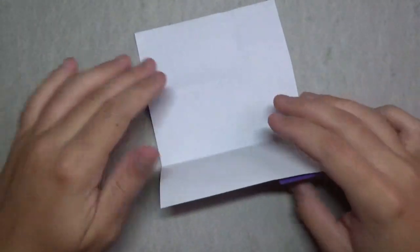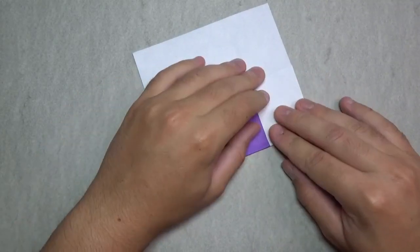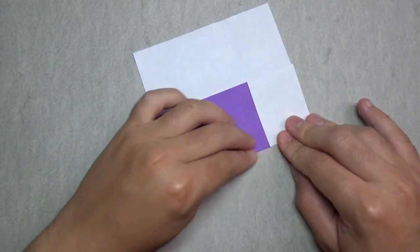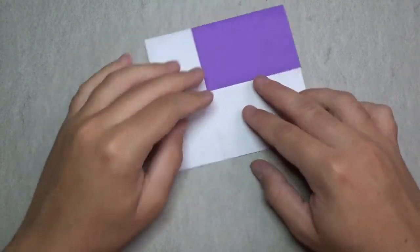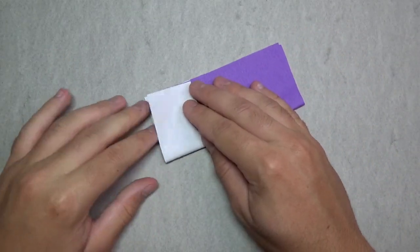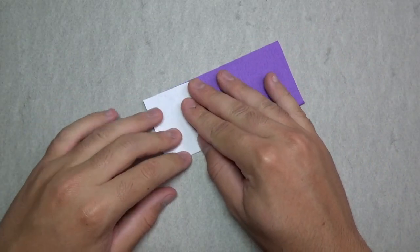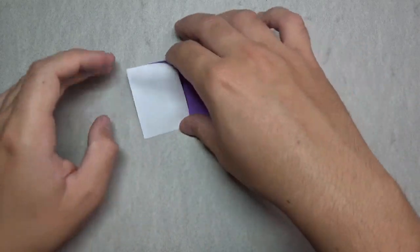And now fold this edge to this crease mark. You can fold this all the way across. Alright, and now fold in half. Okay, unfold.